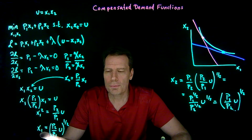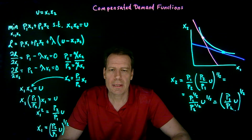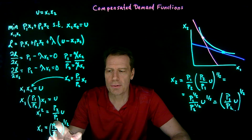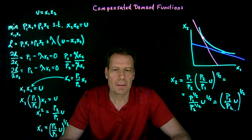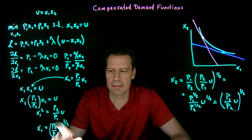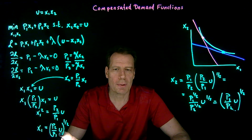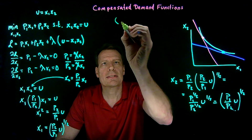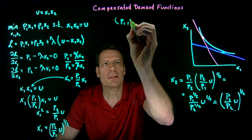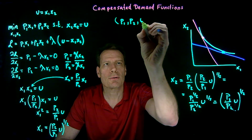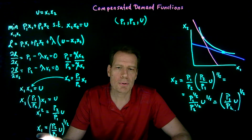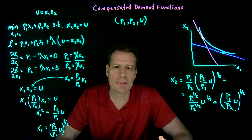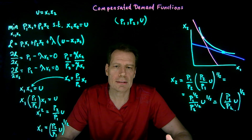So now we have two functions for x1 and x2 that are just a function of the prices and the utility level. These functions tell us how much you're going to consume at different prices, assuming we give you enough money to reach this utility level. These are what we call compensated demand functions — they tell us, for any set of prices p1 and p2 and any utility level, what you're going to end up consuming if we compensate you to reach that indifference curve.